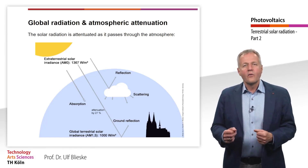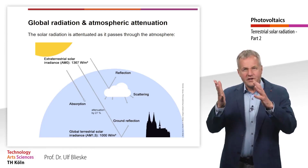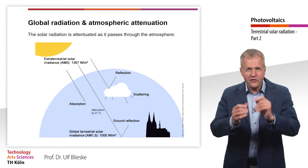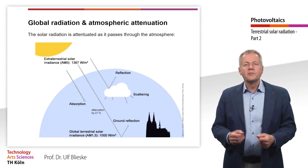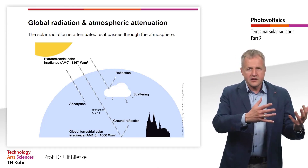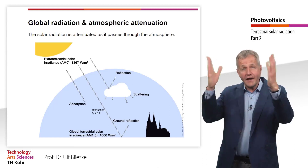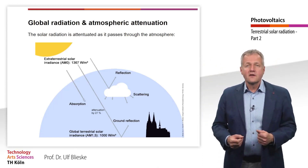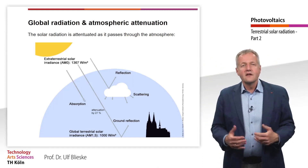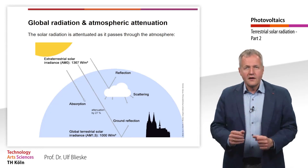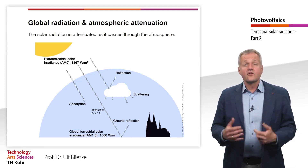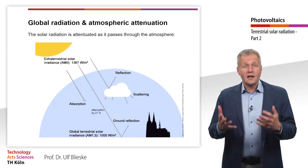However, when this solar irradiation enters the Earth's atmosphere, some of it will be absorbed, scattered, or reflected. This means that the solar irradiance is reduced as it crosses the atmosphere.